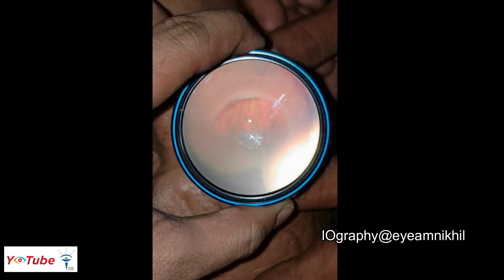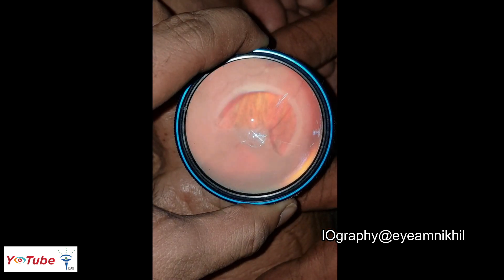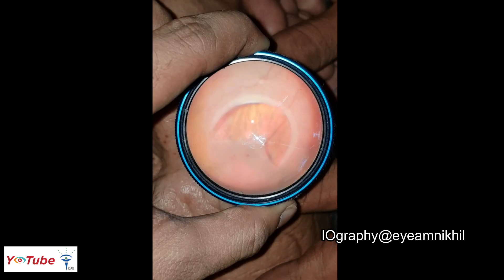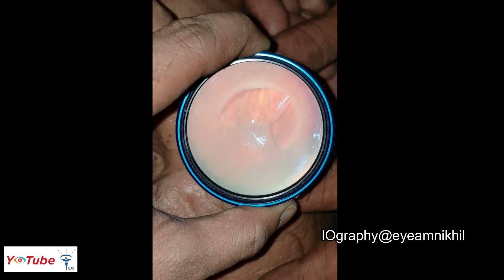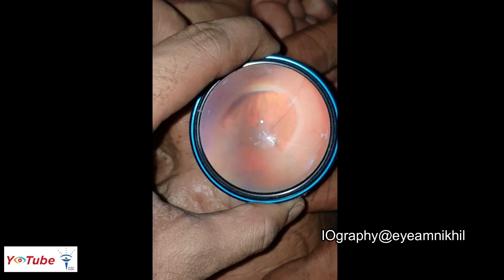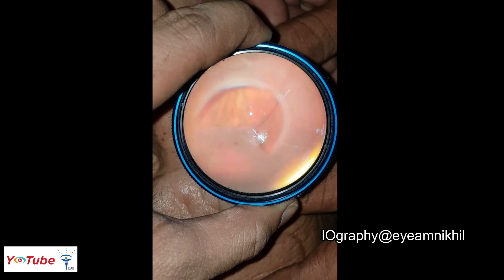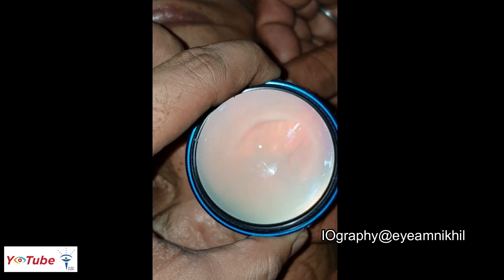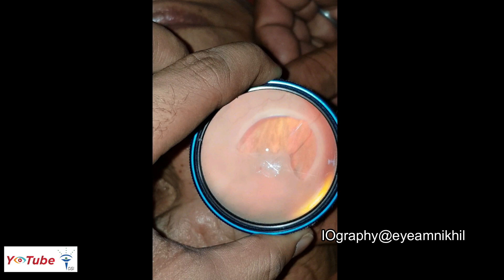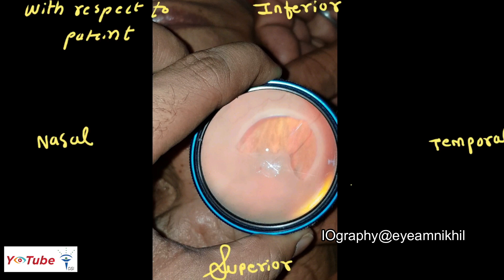What you see here is a large inferior temporal horseshoe tear in the right eye of the patient. The orientations shown are superior, inferior, nasal, and temporal with respect to the patient, and also with respect to the lesion.